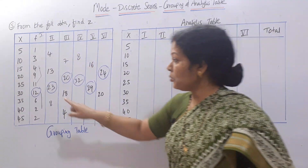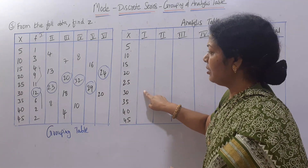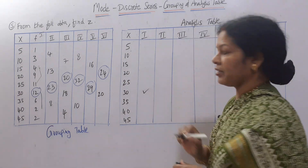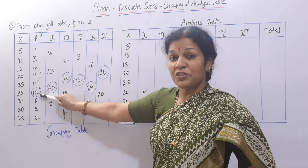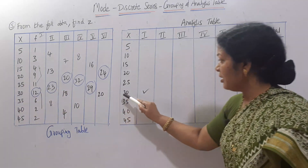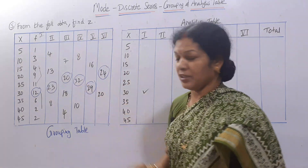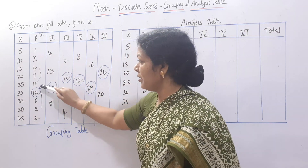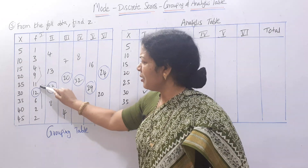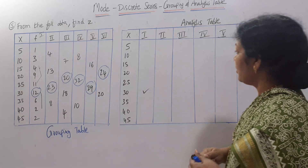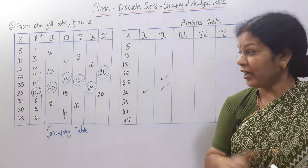In column 1, the highest is 12, which corresponds to X equals 30. So we put a tick mark at 30. In column 2, the highest is 23 — how did we get 23? By adding 11 and 12, which came from X values 25 and 30. So we put tick marks at both 25 and 30 in column 2.